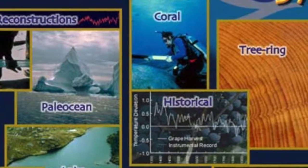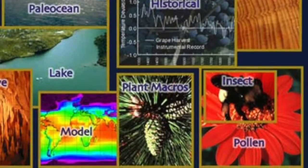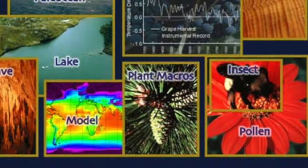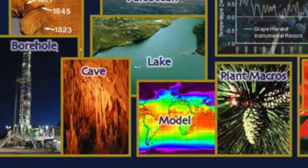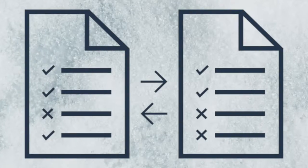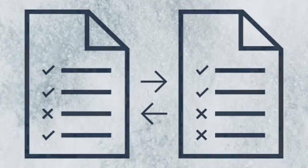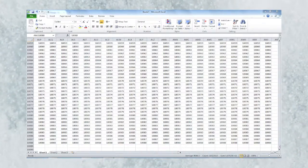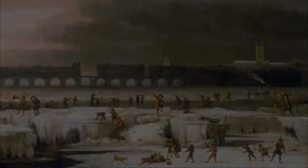Each proxy record is different, with different information stored, different methods of storing this information, different degrees of accuracy, and various start times. But when these records are compared with direct records and each other, and if the sample size is large enough, they can give us a fairly accurate picture of what our climate was like at different points in the past.